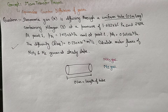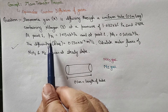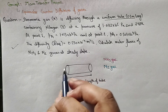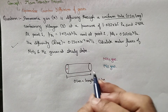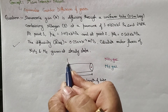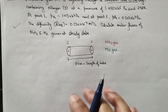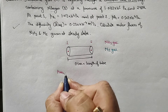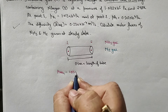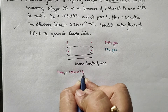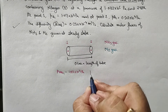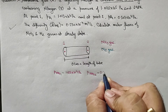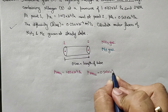It states that partial pressures of ammonia at two different points are given. Let's take these points as 0.1 and 0.2. The partial pressure of NH₃ at point 0.1 is 1.013 × 10⁴ Pascals, and the partial pressure of NH₃ at point 0.2 is 0.507 × 10⁴ Pascals.